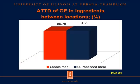Now let's move to results. For ATTD of gross energy in canola and rapeseed meal from different locations: the orange bar represents canola meal from North America and the blue bar represents double-zero rapeseed meal from Europe. ATTD of gross energy in canola meal was 80.78, and for double-zero rapeseed meal it was 81.29. ATTD of gross energy for canola meal and double-zero rapeseed meal from different locations were not different.